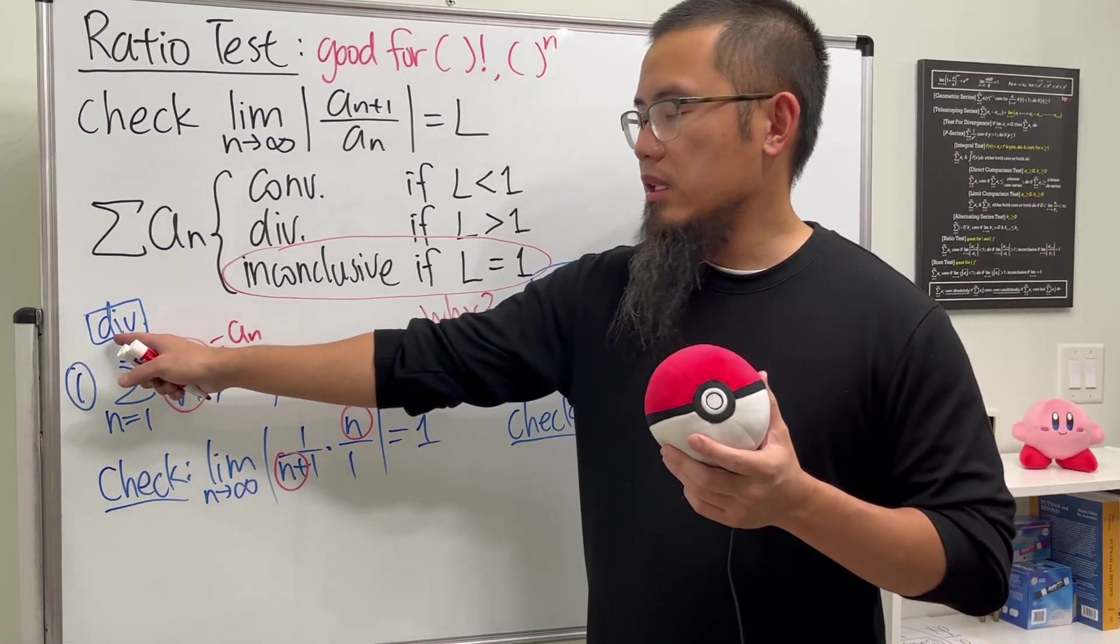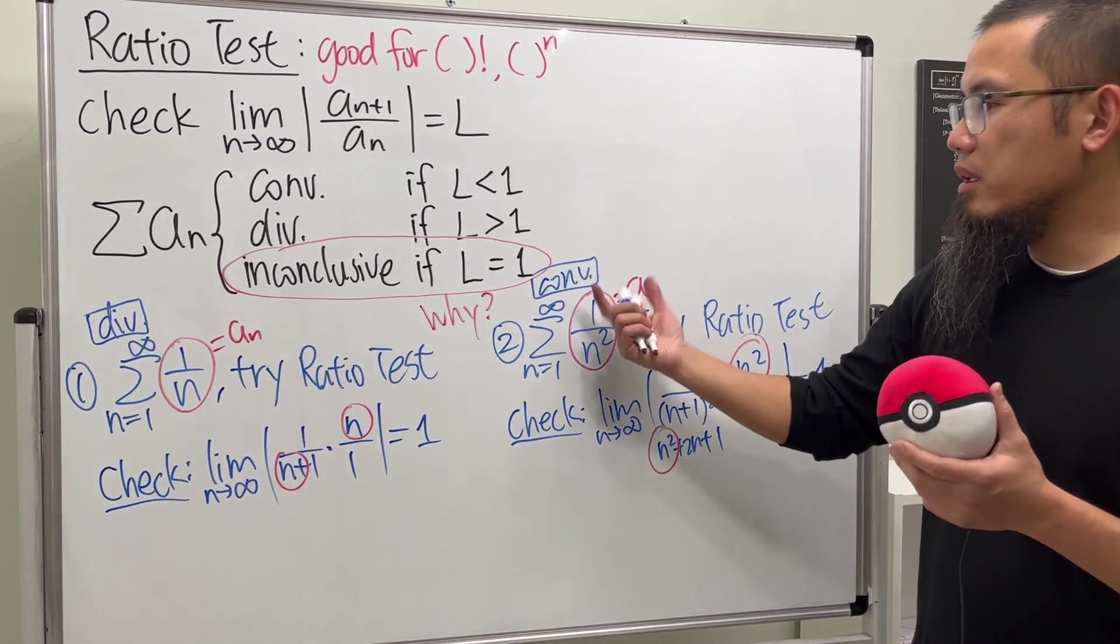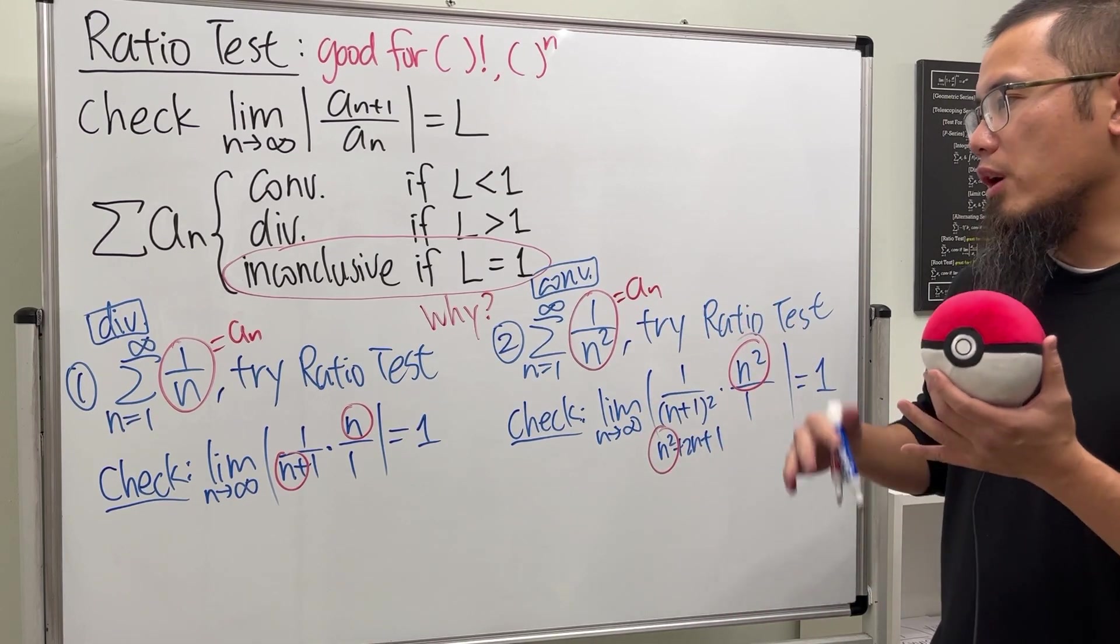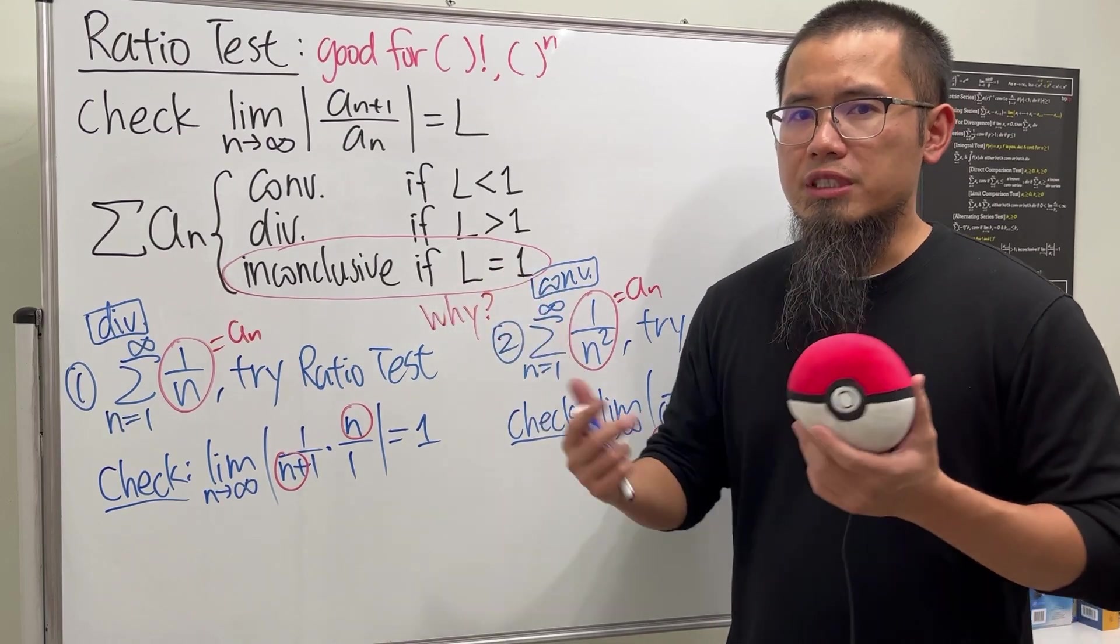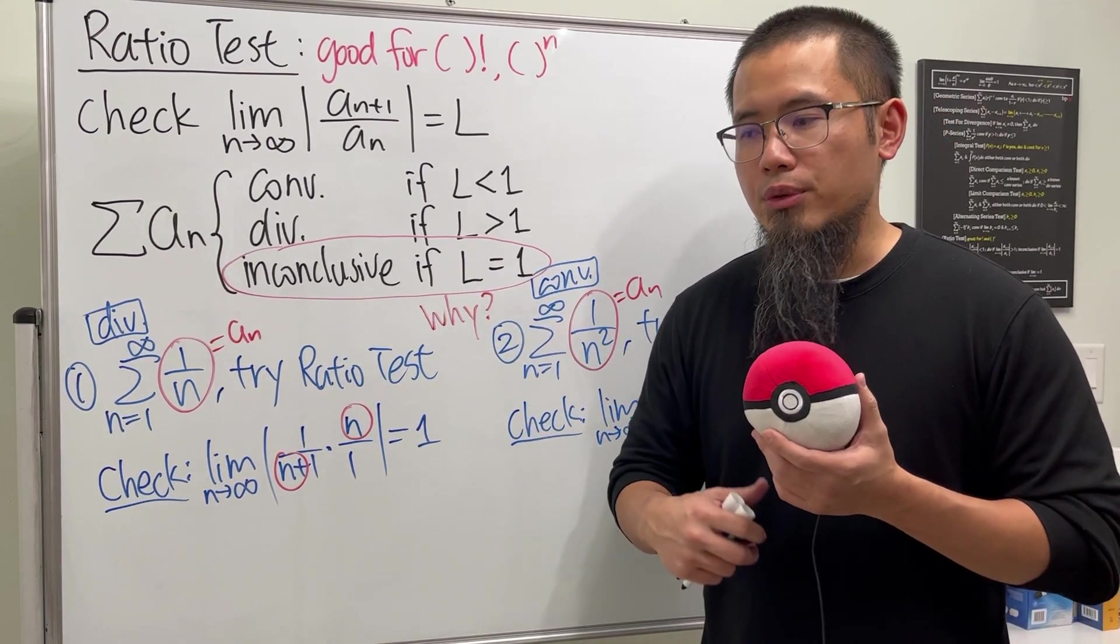The earlier one, it diverges. This one, it converges. So this would be an idea or an example that why when you get L is equal to one, you just cannot say anything. You just have to use another test.